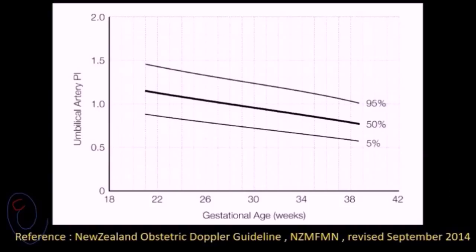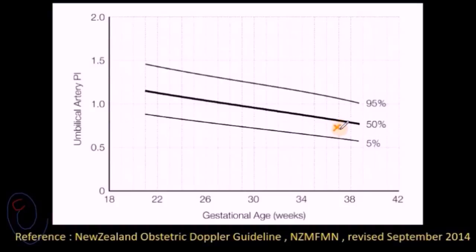Another method uses a reference for the umbilical artery pulsatility index — the link for this reference is in the description. Any result above the 95th percentile is considered abnormal. Analyzing our patient's results, the PI is less than the 50th percentile, which is a normal value.